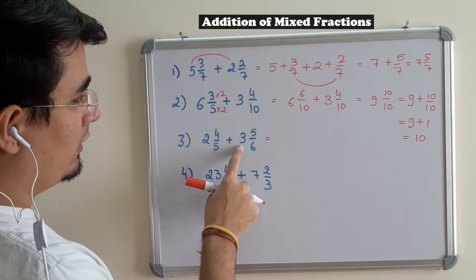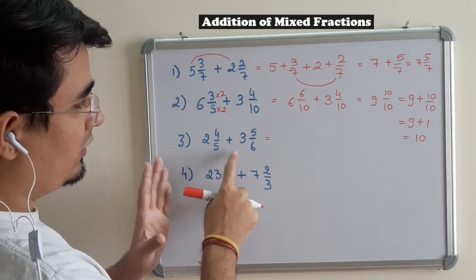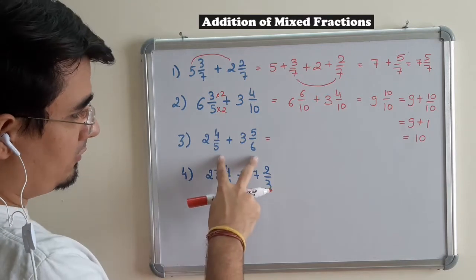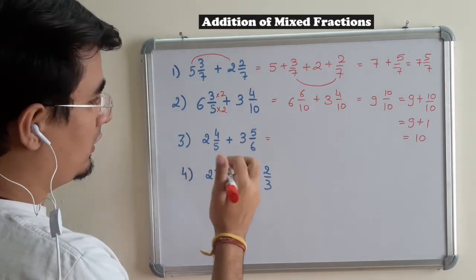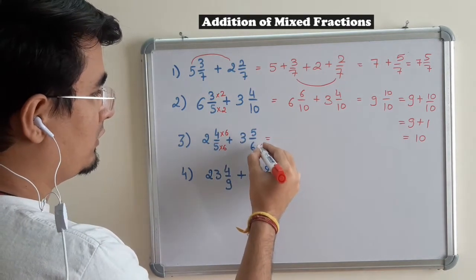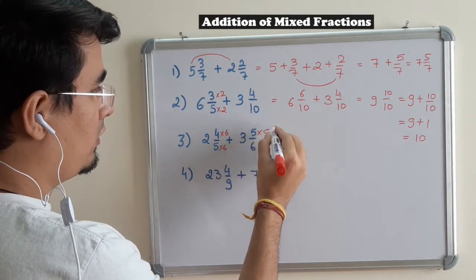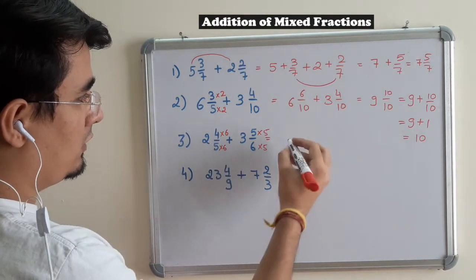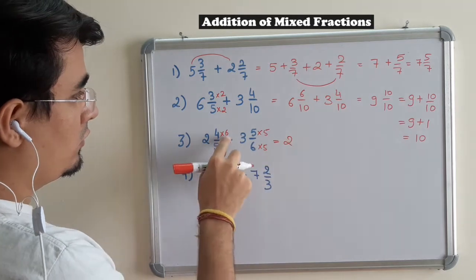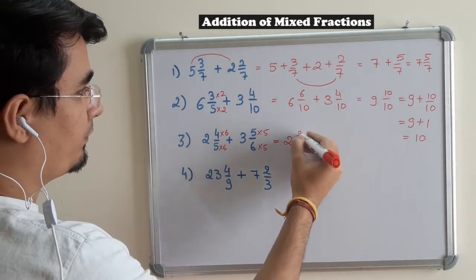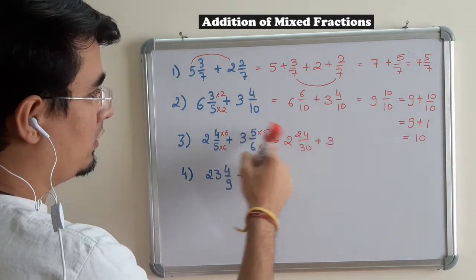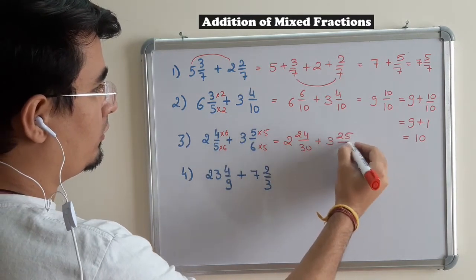Now, 2 plus 3 is 5. The denominator is different, so we have to take LCM. Right now LCM would be what? 5 into 6, 30. So multiplying this by 6, multiplying this by 5. So the answer is 2, 6 plus 4 is 24 upon 30, plus 3, 25 upon 30.